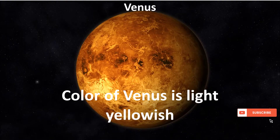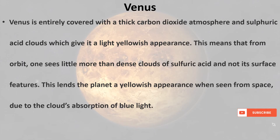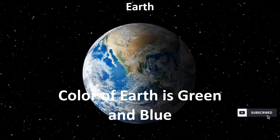The color of Venus is light yellowish. Venus is entirely covered with a thick carbon dioxide atmosphere and sulfuric acid clouds, which give it a light yellowish appearance. From orbit, one sees little more than dense clouds of sulfuric acid and not its surface features. This lends the planet a yellowish appearance when seen from space, due to the clouds' absorption of blue light.